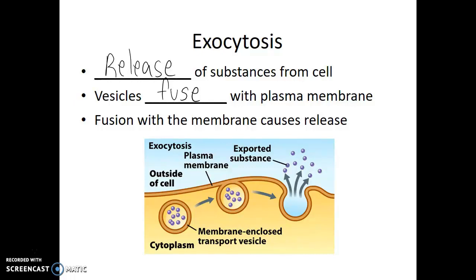Here in this diagram, we can see that there is a vesicle within the cytoplasm of the cell that's filled with material that needs to be released. That vesicle ends up binding to the plasma membrane, and by binding to it, the contents within that vesicle are released out of the cell. Also, the membrane material that made up that vesicle has now become a part of the plasma membrane. This is how the cell adds material to its plasma membrane as well as releases material to its cellular environment.